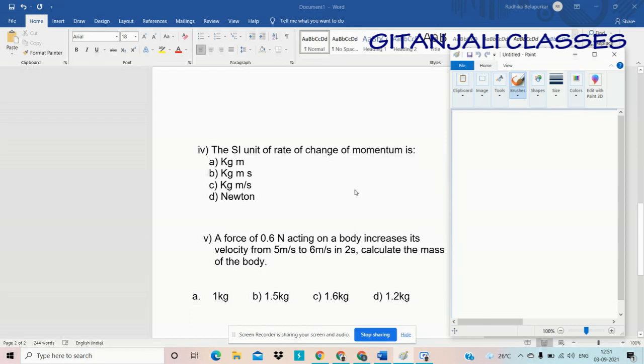Our next question: The SI unit of rate of change of momentum is kg meter per second. So correct option is option C kg meter per second.